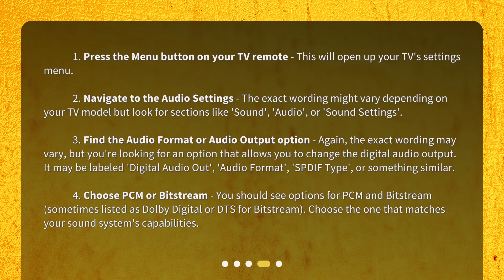Step 3: Find the audio format or audio output option. The exact wording may vary, but you're looking for an option that allows you to change the digital audio output. It may be labeled Digital Audio Out, Audio Format, SPDIF Type, or something similar. Step 4: Choose PCM or Bitstream. You should see options for PCM and Bitstream, sometimes listed as Dolby Digital or DTS for Bitstream. Choose the one that matches your sound system's capabilities.